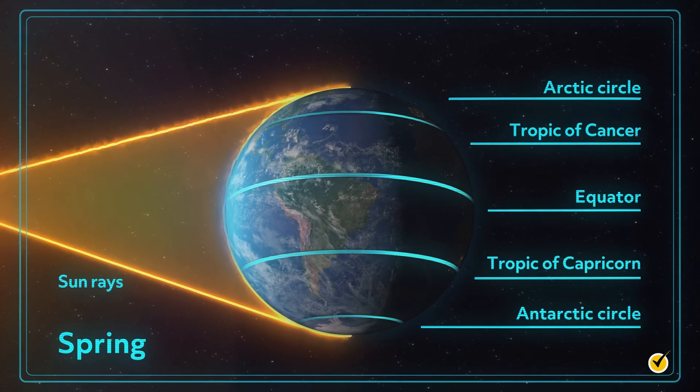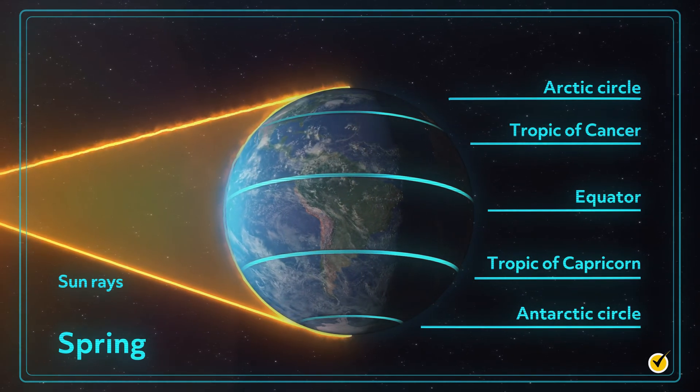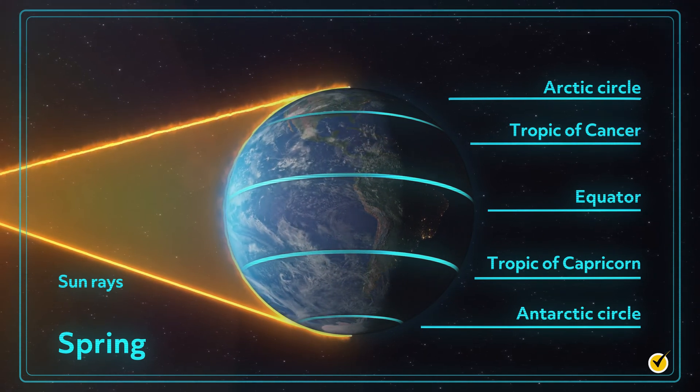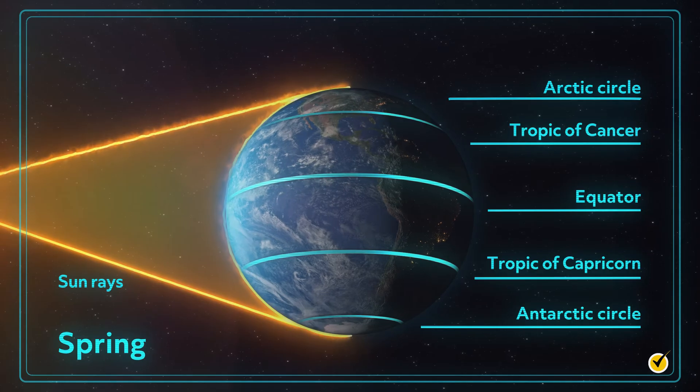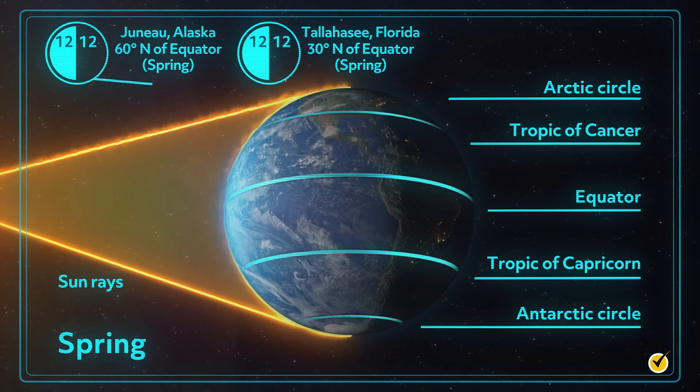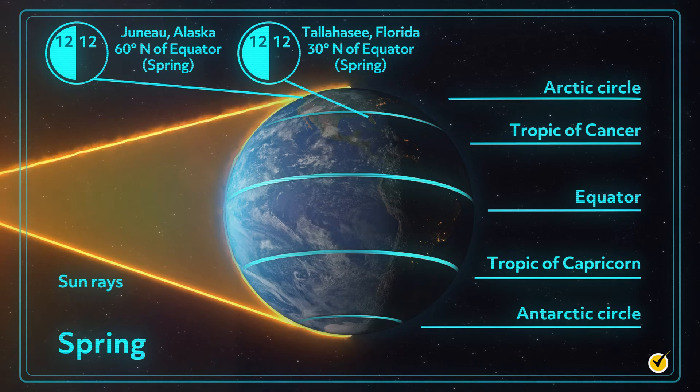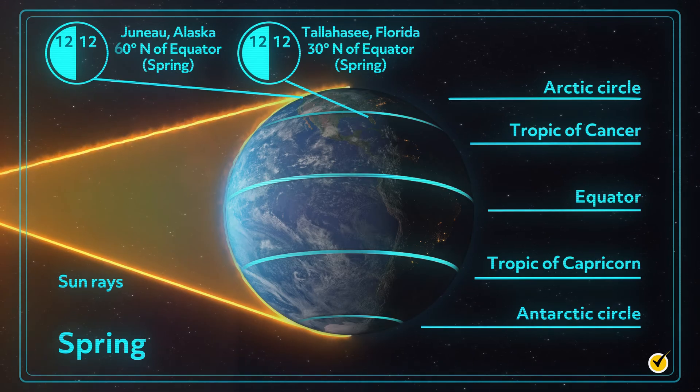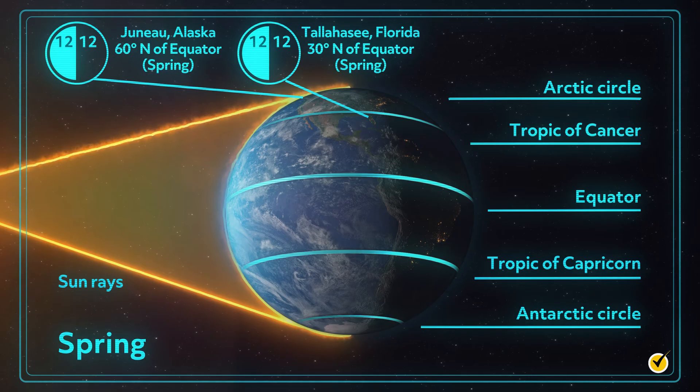One thing I want to point out from this image is the amount of daylight that we experience in the springtime. Because Earth is tilted on its axis at this point, not tilted toward or away from the Sun, all areas of the globe will receive equal amounts of daylight and darkness, 12 hours of each. The first day of spring, as shown here, is called the vernal equinox, meaning equal daylight and darkness.